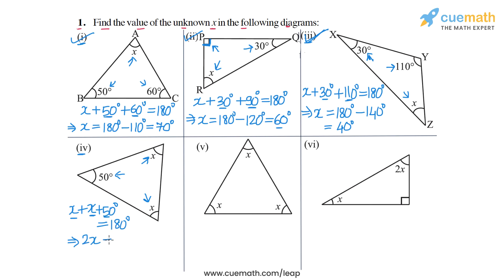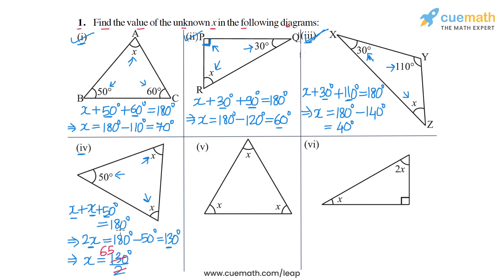So we will get 180 degrees minus 50 degrees, or 130 degrees. So 2x is equal to 130 degrees. From here x is equal to 130 degrees divided by 2, and 130 divided by 2 is 65. So x is equal to 65 degrees — that is the answer for part 4.